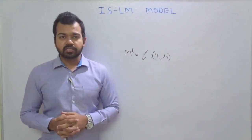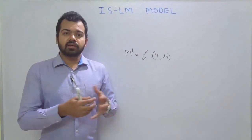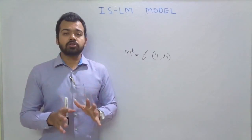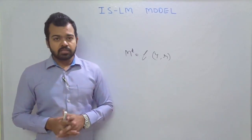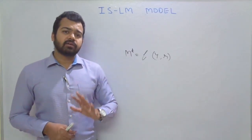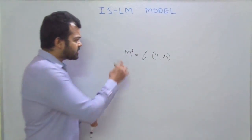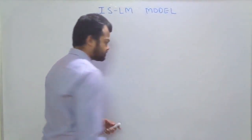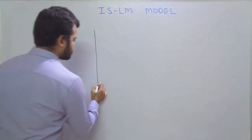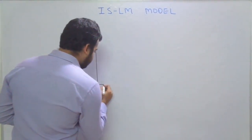Consider another case: if I do not invest in an FD and I consume today, I am foregoing the rate of interest but fulfilling current consumption demand. These are two important aspects of the LM curve and consumption. Money demand depends on these two things. Now we'll draw the diagram to derive the LM curve.